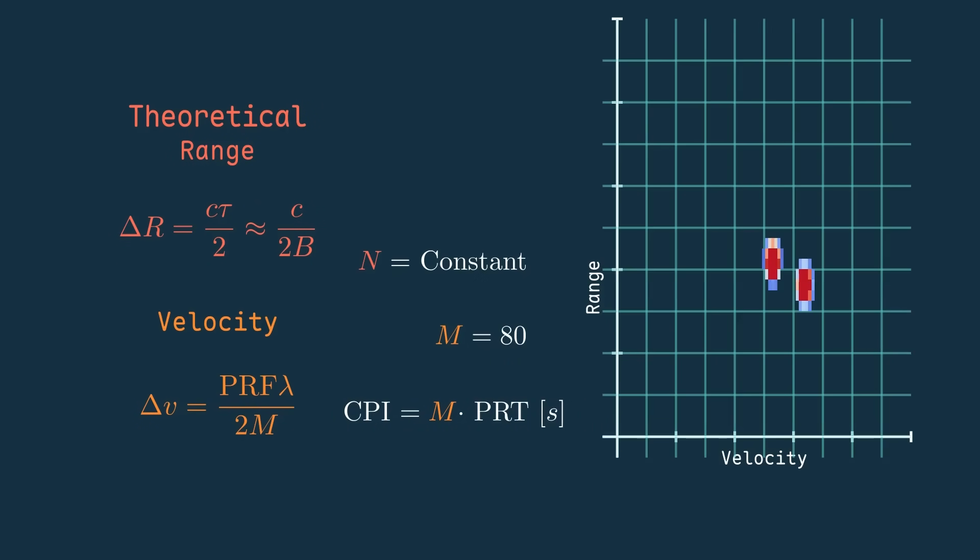This means that while our physical range resolution might not have changed, we're actually sampling at a coarser resolution, so we can't take full advantage of that range resolution.